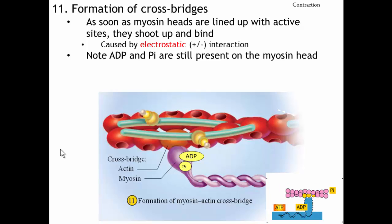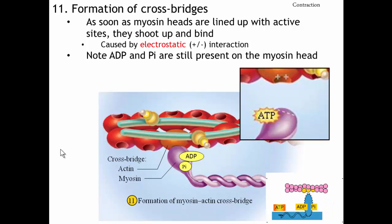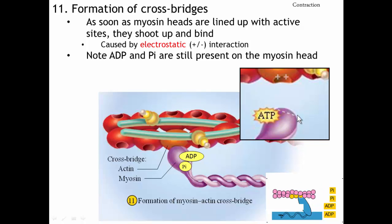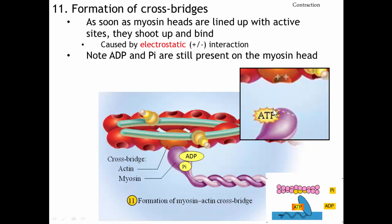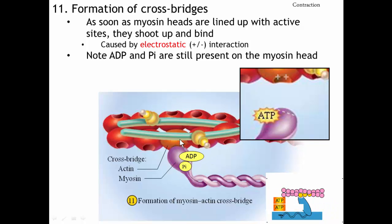Step eleven is formation of the cross bridge — this is when the myosin actually grabs onto the actin. As soon as the myosin heads are lined up after the cocking step, they shoot up and bind right onto the active sites on actin. It's an electrostatic interaction — you can think of it as minuses on the myosin head and pluses on the actin naturally coming together. When the myosin grabs onto the actin, notice that ADP and inorganic phosphate are still present on the myosin head.